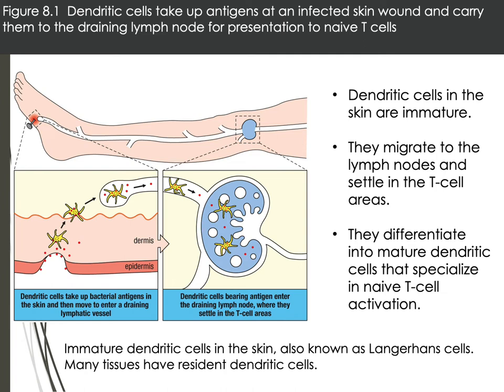In order to get antigen presented to T-cells, you need innate cells like dendritic cells to take up antigen, and then it traffics to secondary lymphatic tissues like the draining lymph node. Draining lymph nodes are located throughout the tissue and drain certain regions of the body. The dendritic cell takes up bacteria through phagocytosis, processes it, and brings it back to the lymph node.